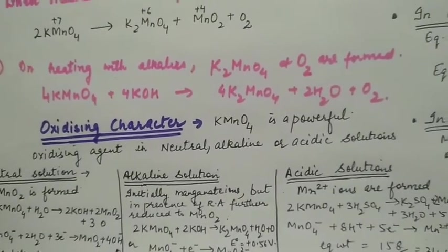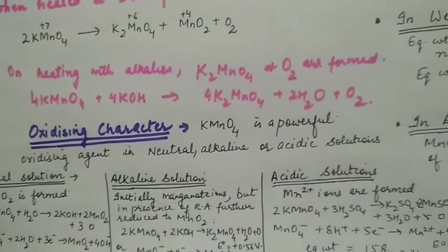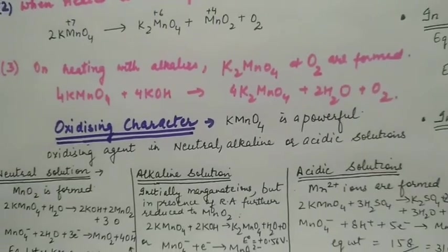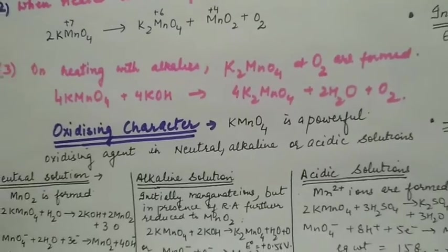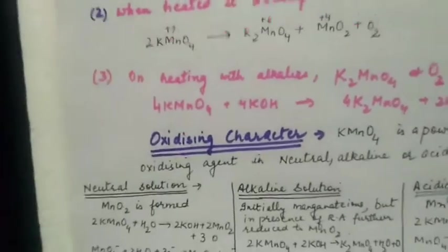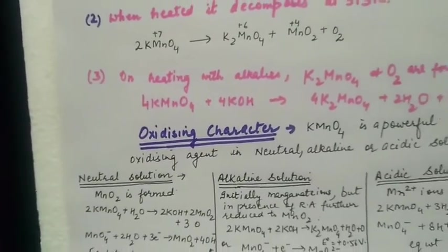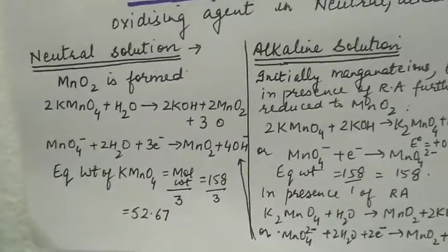Important property is that potassium permanganate is a powerful oxidizing agent in neutral, alkaline, as well as acidic solutions. The difference is in the products formed.